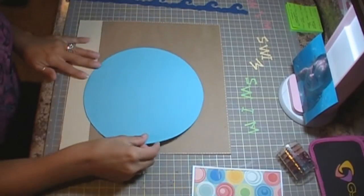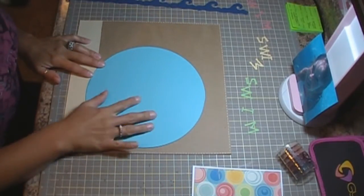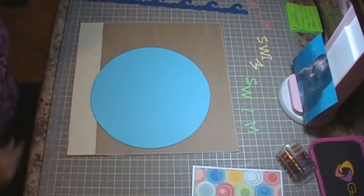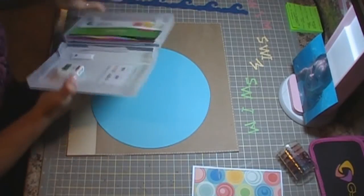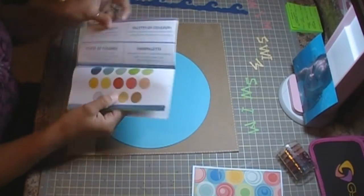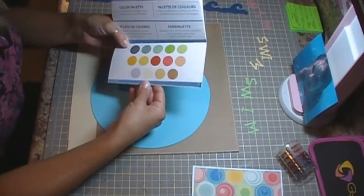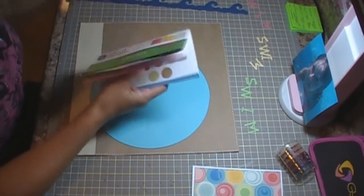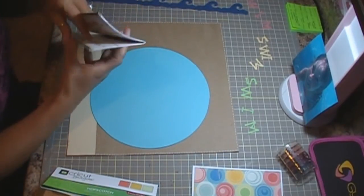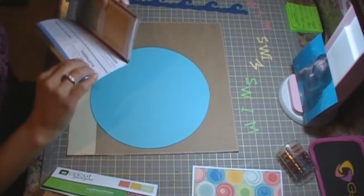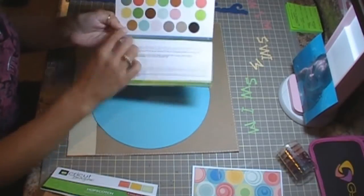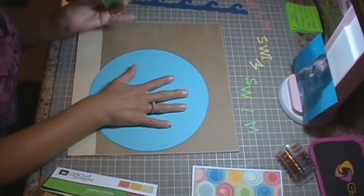I also have a circle, which is cut at 9 inches. For this circle image, I used the color palette on the Hopscotch cartridge along with my title. Well, actually, I did it on my Imagine. I just scrolled through it. So, for this one, I used the color palette, which is always at the back of the cartridge, and then I printed this one out.